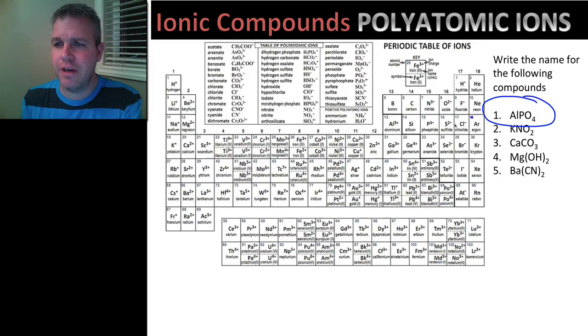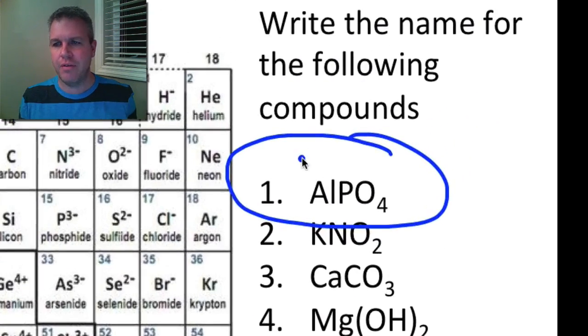Our first example here is AlPO4. Now, again, how do I identify that this compound, first of all, is ionic, and then second of all, it deals with a polyatomic ion?